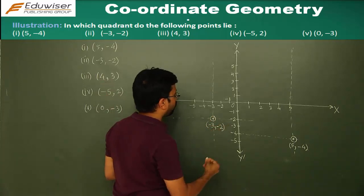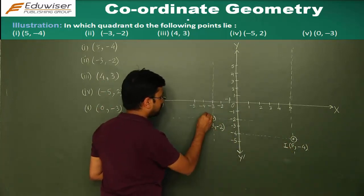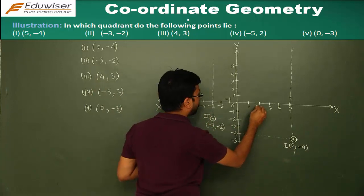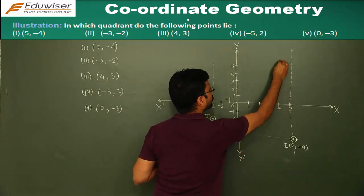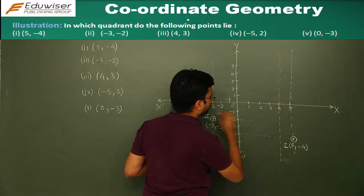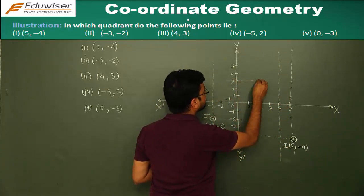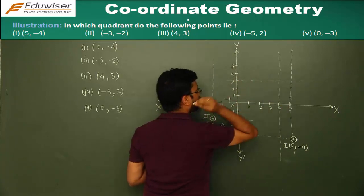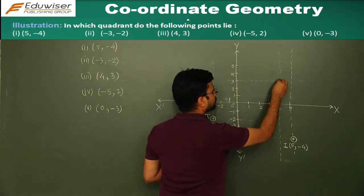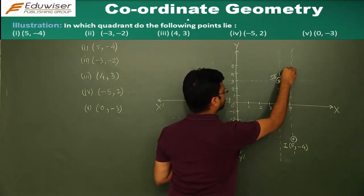The third point is (4, 3). This is the first point, this is the second point. For the third point, you have 4 on the x-axis — draw a line parallel to the y-axis — and corresponding to y equals 3, you draw a line parallel to the x-axis. The point of intersection gives you the third point (4, 3).